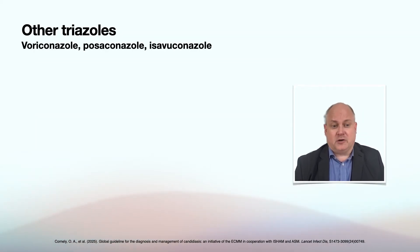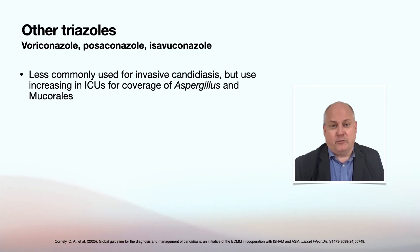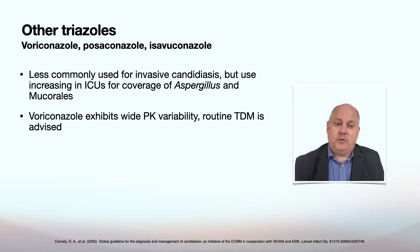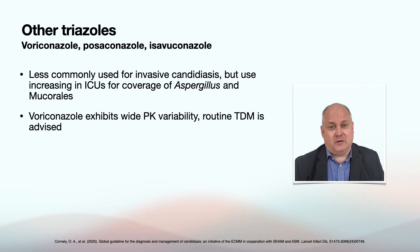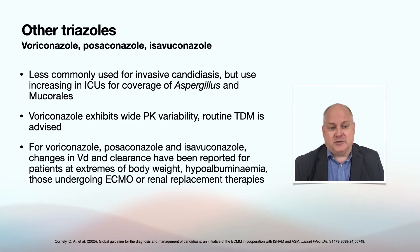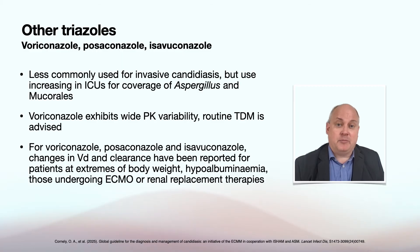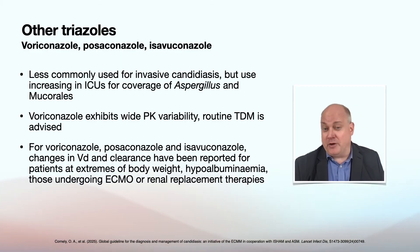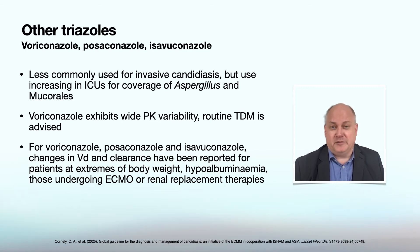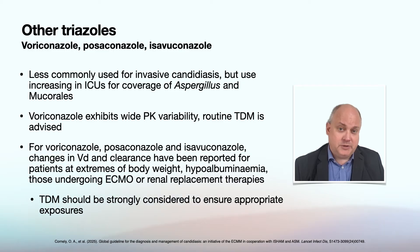Other triazoles are less frequently used specifically for invasive candidiasis, but may be part of a regimen covering aspergillosis or mucormycosis. Voriconazole exhibits wide pharmacokinetic variability irrespective of ICU status, so routine TDM is always advised if available. For posaconazole and isavuconazole, there is accumulating evidence that volume of distribution and clearance are altered in patients at extreme body weight — both very low and very high — and in patients with hypoalbuminemia, though there is some controversy about interpreting this when free drug concentrations are not always measured. Patients undergoing ECMO or renal replacement therapies may also have lower exposures. If TDM is available, these are situations where it should be considered to guide dosing.